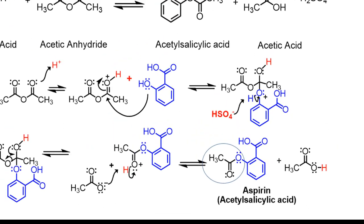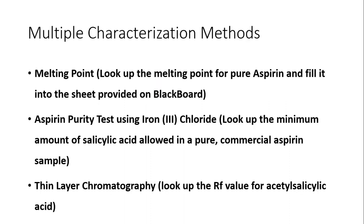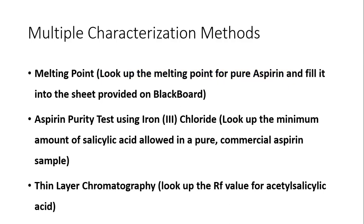So how do we know what we made? There are several ways to characterize a compound. You can use the melting point — every compound that's ever been synthesized, if it's a solid, it's probably got a melting point recorded somewhere. On the handout, look up the melting point for pure aspirin and put it into the answer column where it asks for pure aspirin on the handout in Blackboard.